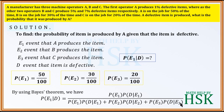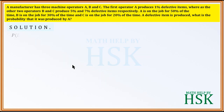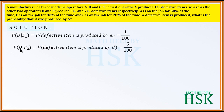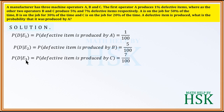P(D | E1) is the probability that the defective item is produced by A, which equals 1/100, since A produces 1% defective items. Similarly, P(D | E2) = 5/100 since B produces 5% defective items, and P(D | E3) = 7/100 since C produces 7% defective items.